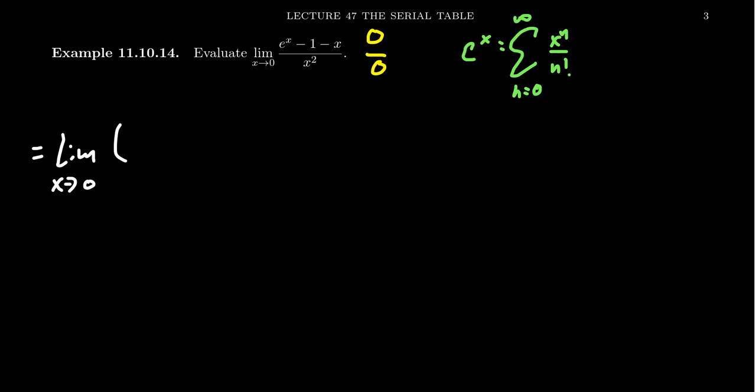So you get 1 plus x plus x squared over 2 plus x cubed over 6 plus x to the 4th over 24, etc. And then you're subtracting from that 1, subtracting from that x over x squared.